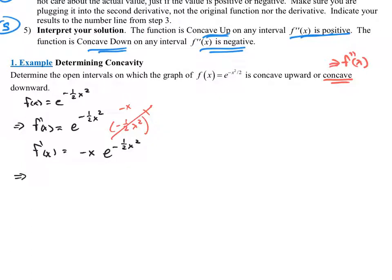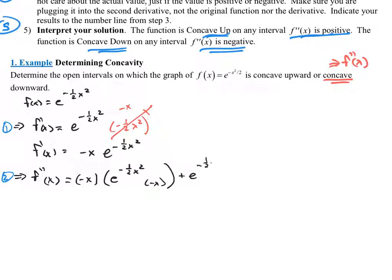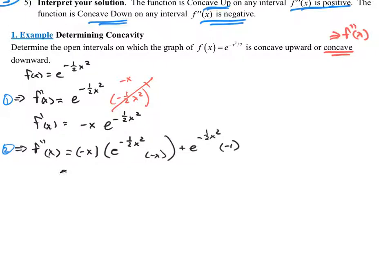Now I need to find the second derivative — that was step two. To find the second derivative, I have a product here, so I need the product rule. The first function is negative x; the second function is e to the negative one half x squared. The product rule gives us: the first, negative x, times the derivative of the second — which is e to the negative one half x squared times negative x — plus the second, e to the negative one half x squared, times the derivative of the first, which is negative one. Cleaning this up: negative x times negative x gives x squared e to the negative one half x squared, minus e to the negative one half x squared.